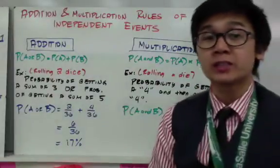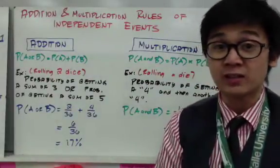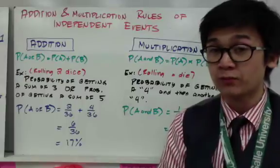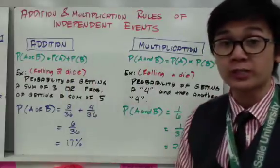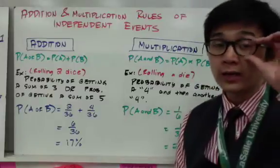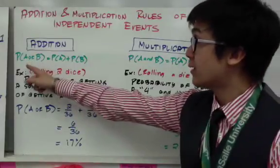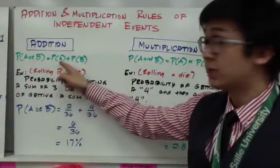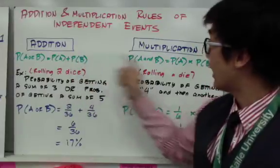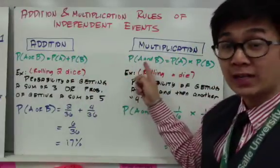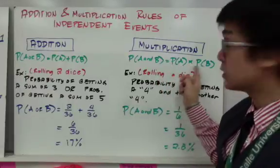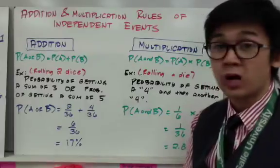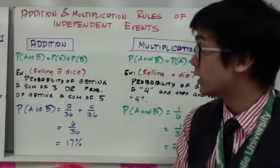There are two operations we can work with for independent events: the addition rule and the multiplication rule. Make sure your experiment is independent before using these operations. The addition rule states P(A or B) = P(A) + P(B). The multiplication rule states P(A and B) = P(A) × P(B). Make sure the experiment is independent, otherwise the formula will not work.